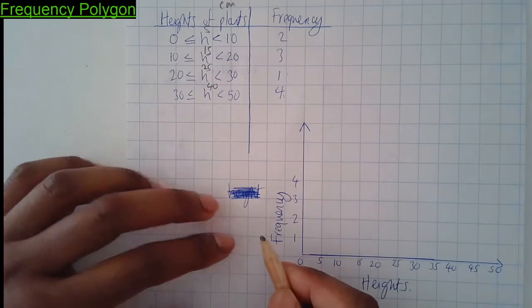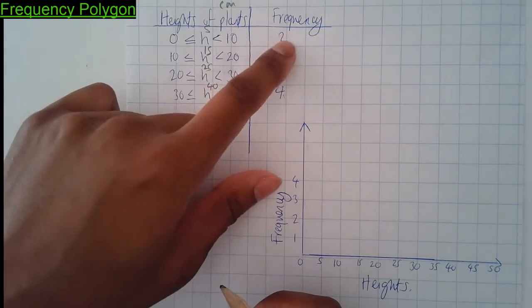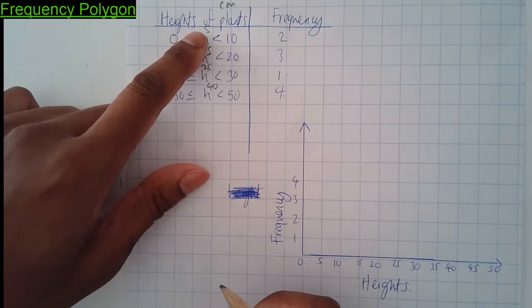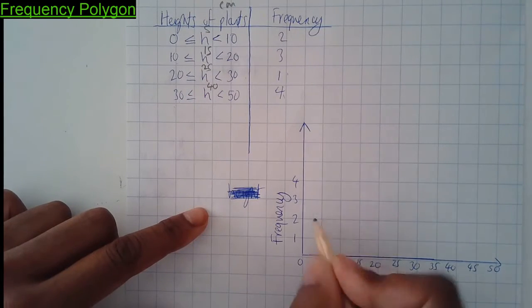So what you then do, you do five along the corridor, two up the stairs, 15 along the corridor, three up the stairs and so on. Let's do the first one. Five and two. Five, two right there.